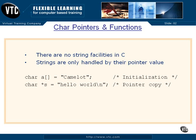Let's take a look at the use of some character pointers and function calls with it. First of all, there are no string facilities in C. The C programming language does not understand what a string is, really. A string to it is just an array of characters with a null at the end — some way of telling you that you're at the end of the string. Strings are only handled by their pointer value, which is the pointer to the first character in a string.